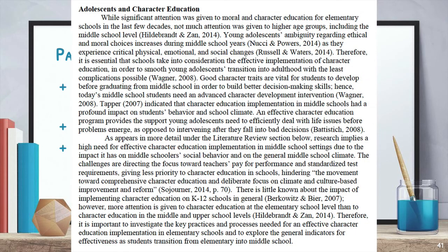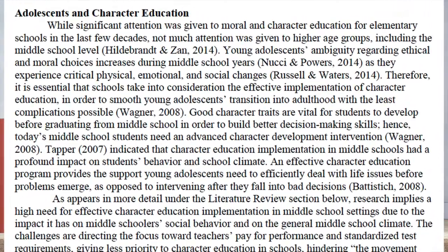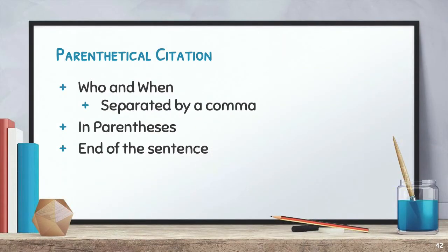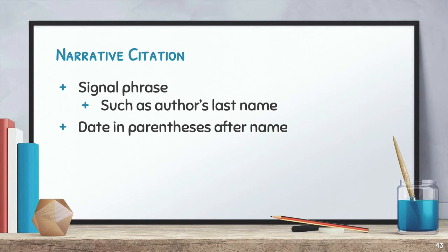Here's an example of parenthetical citations. The author's name and year of publication appear at the end of the quote or paraphrased sentence. The parenthetical citation is who and when, separated by a comma in parentheses at the end of the sentence in which they were quoted or paraphrased. You can also incorporate your citation into the text by adding a signal phrase like the author's name in the sentence introducing the quote or paraphrase. This is called a narrative citation. If you're using a narrative citation, you'll follow the signal phrase with the year of publication in parentheses.